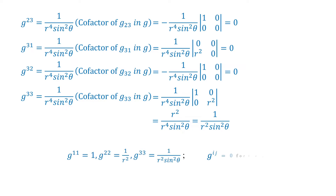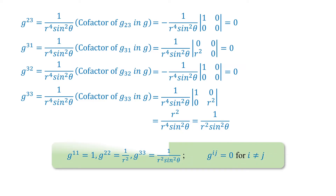Therefore, g^11 equal to 1, g^22 equal to 1 by r square, g^33 equal to 1 by r square sin square theta, and g^ij equal to 0 for i not equal to j.